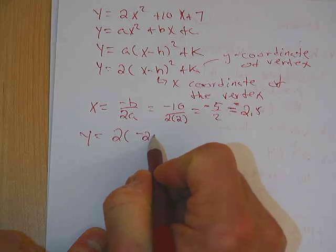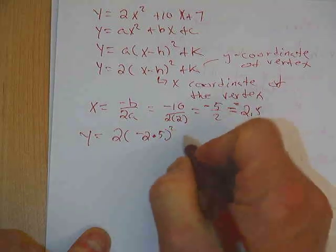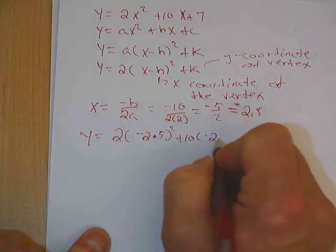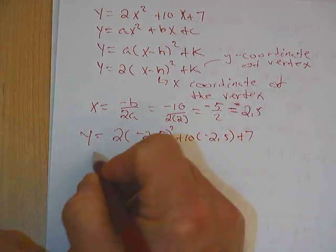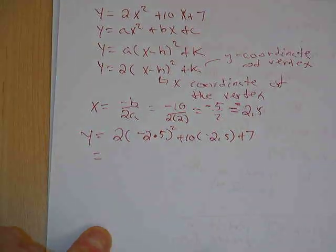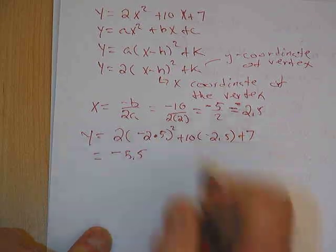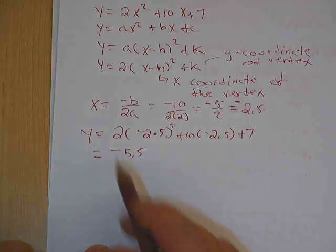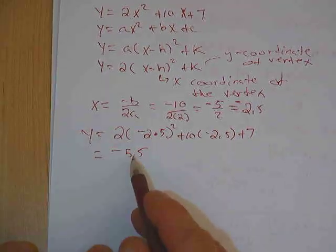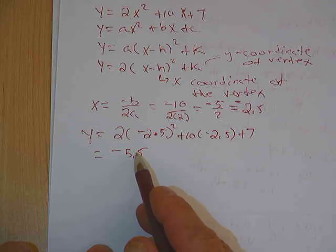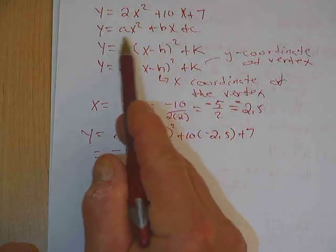Well that's going to be y equals 2 times negative 2.5 squared plus 10 times negative 2.5 plus 7. Looking at my notes, I find that y equals negative 5.5, which this y that I found is the y coordinate of the vertex.